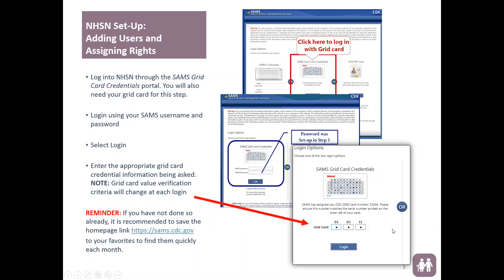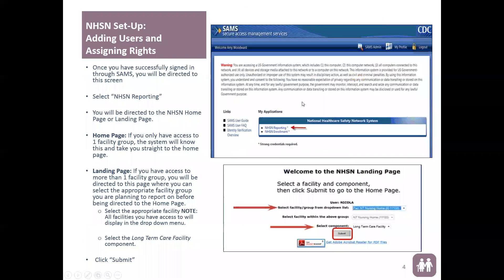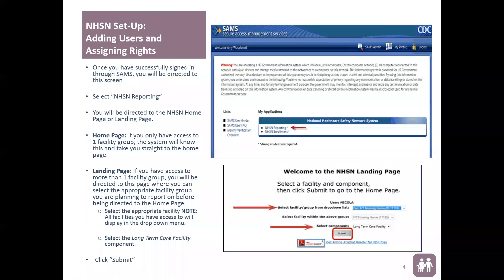Once you have successfully logged in you will be directed to the My Applications page. Select NHSN Reporting. If you are reporting for just one facility it will take you straight to the home page. If you are reporting for more than one facility it will take you to the NHSN landing page, where you will select the appropriate facility — select the long-term care facility and then submit.